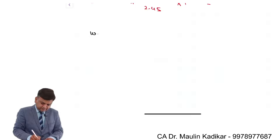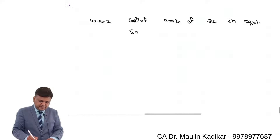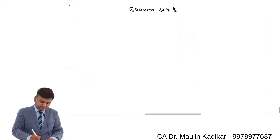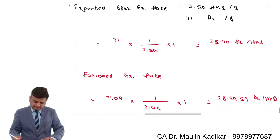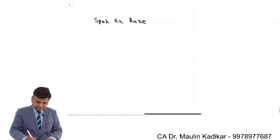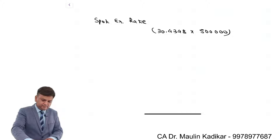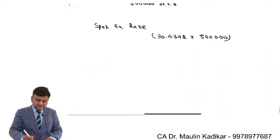Working note number 2: calculation of amount of rupees equivalent to 5 lakhs Hong Kong dollars. Using the spot exchange rate of 30.4348 rupees per HKD, multiplied by 5 lakhs, that comes to 152.174 lakhs rupees.